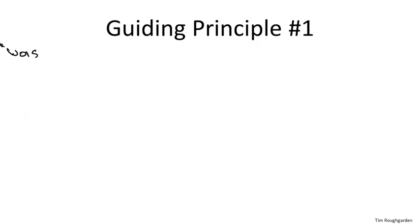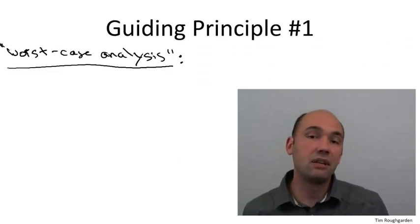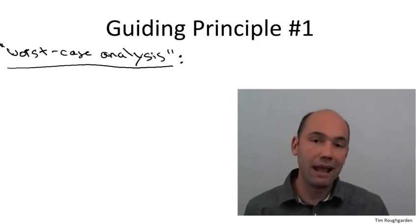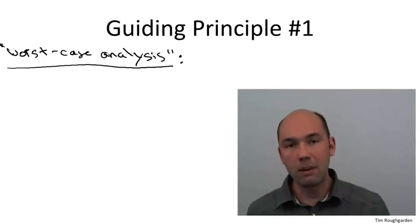So the first guiding principle is that we used what's often called worst case analysis. By worst case analysis, I simply mean that our upper bound of 6n log n plus 6n applies to the number of lines executed for every single input array of length n. We made absolutely no assumptions about the input, where it comes from, what it looks like, beyond what the input length n was.